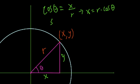Same with the sine of theta is y over r, giving that y is r times sine of theta.